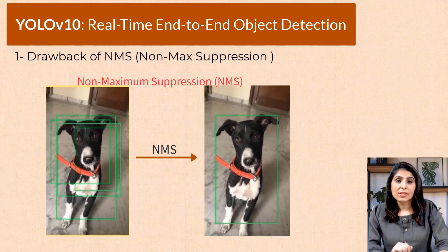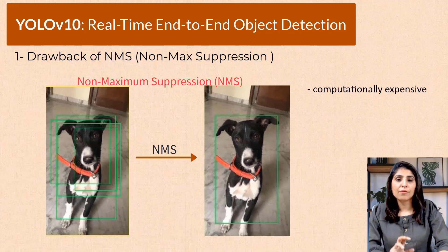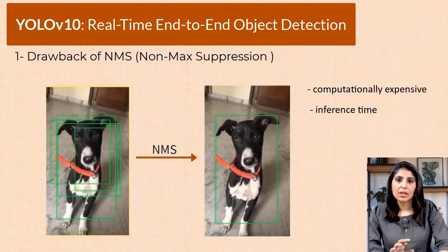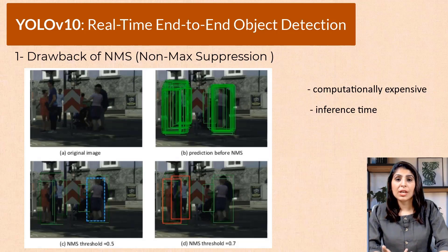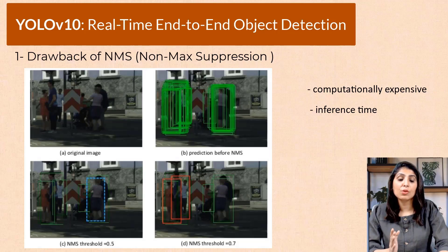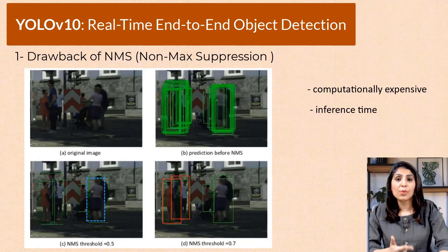The drawback of NMS is its computational cost and inference time. NMS involves sorting bounding boxes based on their confidence scores and then performing comparisons to check for overlap, which can be computationally expensive, especially when you have a large number of detected boxes. This increases the inference time because the post-processing step adds additional computational work.